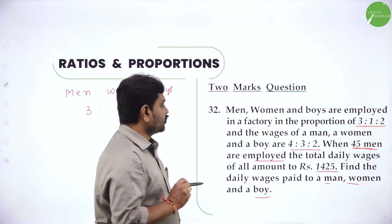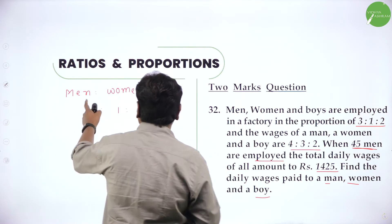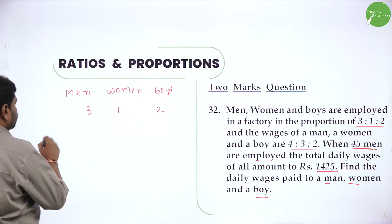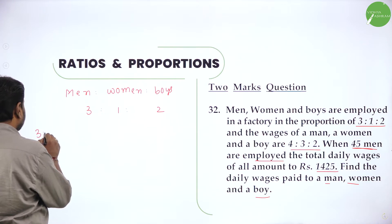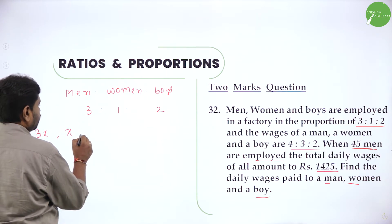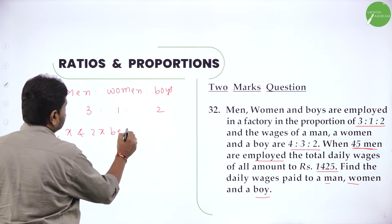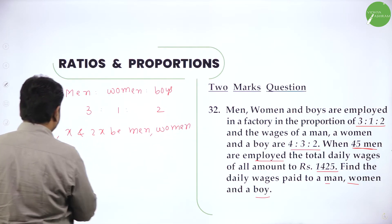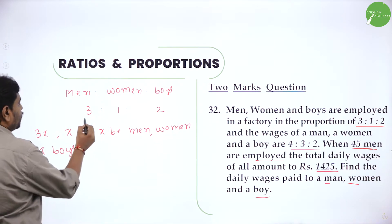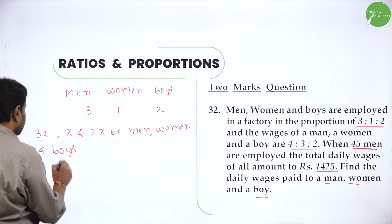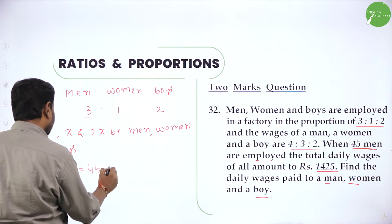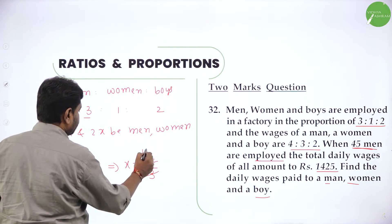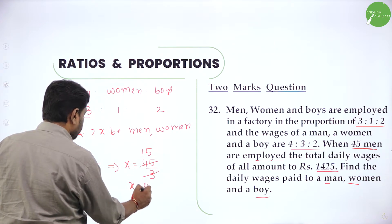They gave men, women and boys in the ratio 3 is to 1 is to 2, and there are 45 men. So let 3x, 1x and 2x be men, women and boys. They told men is 45. So 3x equals 45. That implies x equals 45 by 3, which is 15. So x is equal to 15.